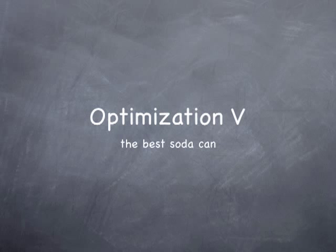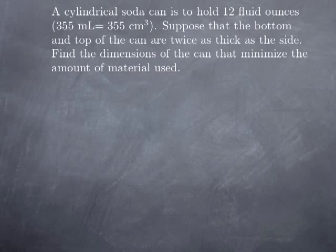We're going to go over one last example of an optimization problem where we're trying to optimize the dimensions of a soda can. More specifically, we are trying to design a cylindrical soda can that is going to hold 12 fluid ounces. Because fluid ounces are not very practical to relate to length, the conversion of 12 fluid ounces is 355 milliliters, which is the same as 355 cubic centimeters.